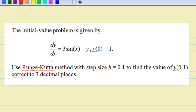The following example will illustrate the procedure. We are given that dy/dx is equal to 3 times sin(x) minus y, and the value of y when x equals 0 is 1. Use the Runge-Kutta method with step size h equal to 0.1 to find the value of y when x equals 0.1.